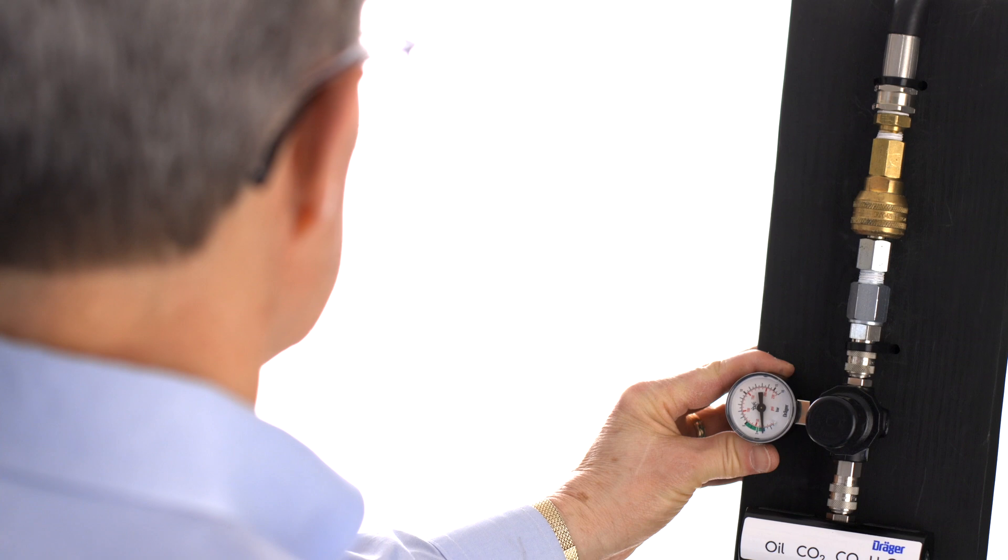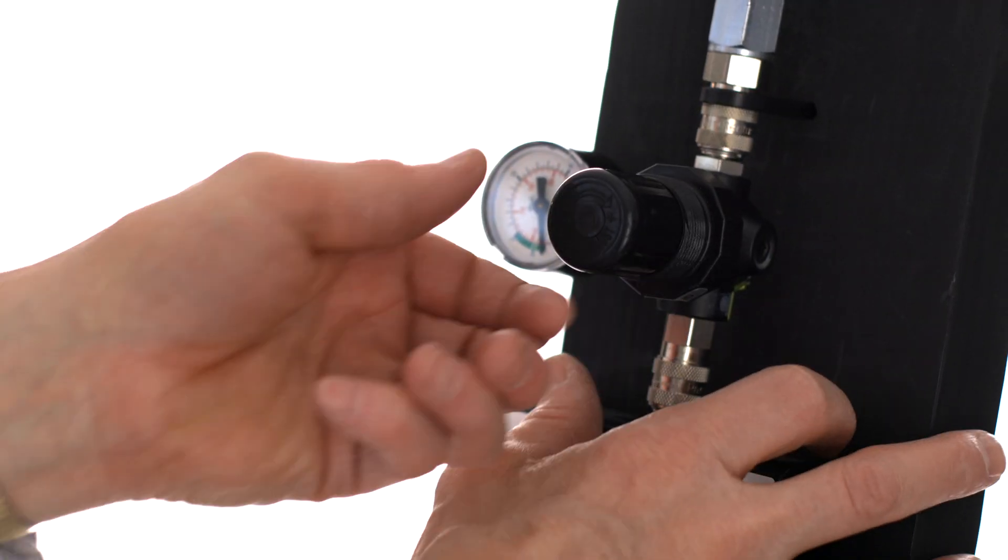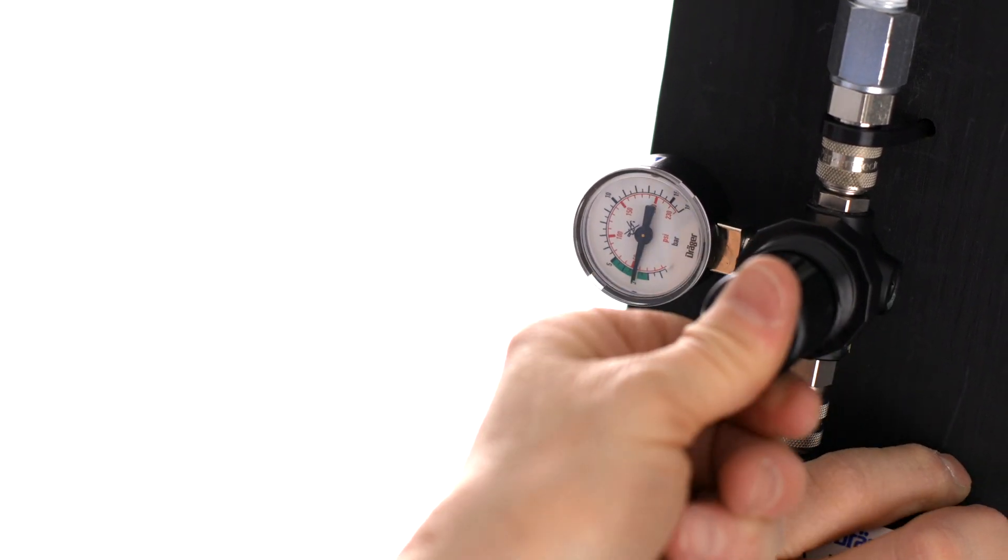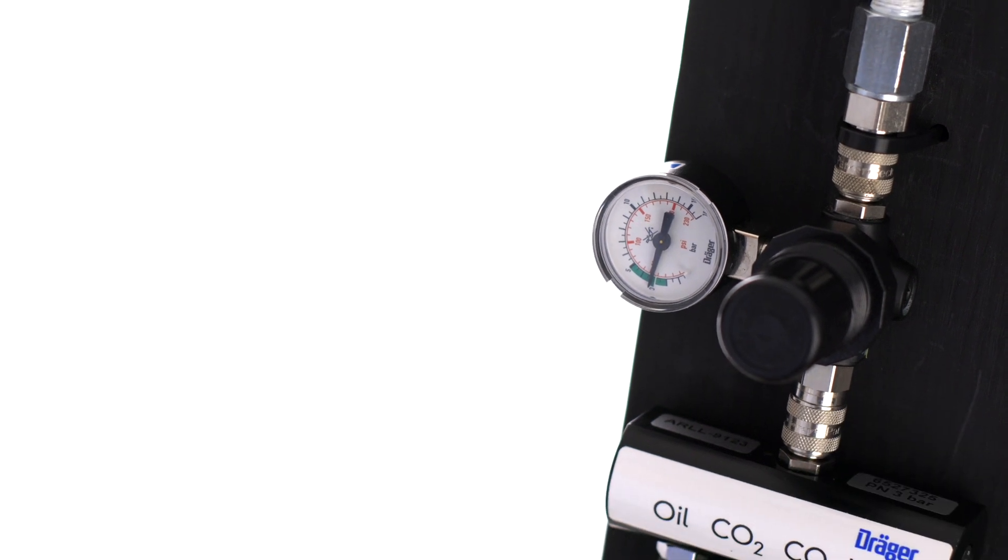Check the reading on the pressure gauge. If it's not reading 3 bar, pull out the black hand wheel and turn it to set the pressure to 3 bar. Since the pressure reducer is not self-compensating, the gauge must be checked for each application to ensure the outlet pressure to the measuring device is set properly.